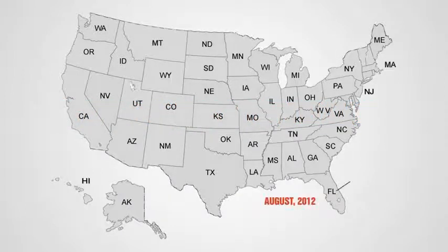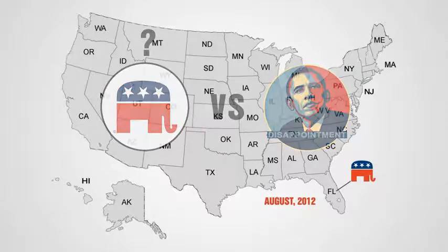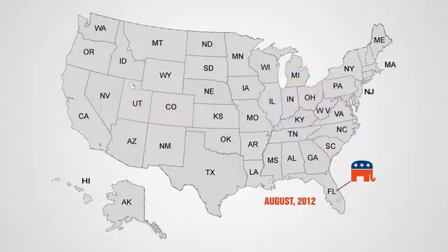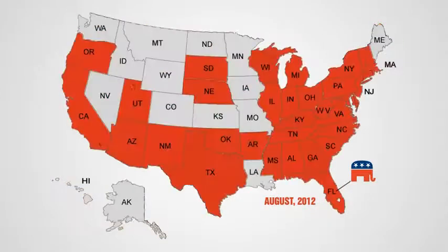In August 2012, the Republican Party will hold a national convention in Florida in which delegates will officially vote for a Republican nominee to run against Barack Obama. Each state has its own process for electing these delegates, either through a caucus system or a primary system.